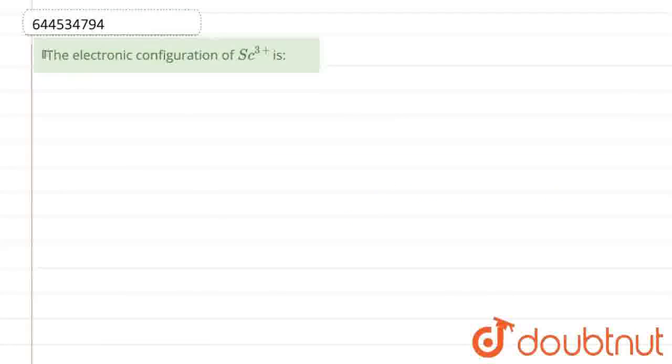Hello everyone, so the question is asking for the electronic configuration of SC3+. SC3+ - first of all, this element is scandium. Scandium has an atomic number of 21, so Z equals 21 in case of scandium.